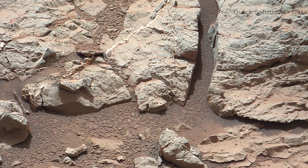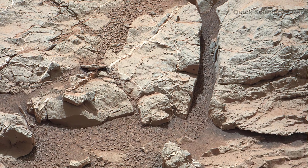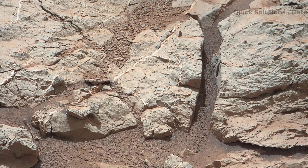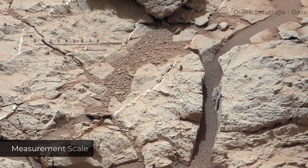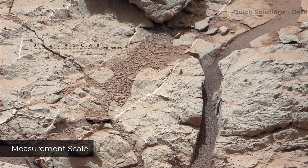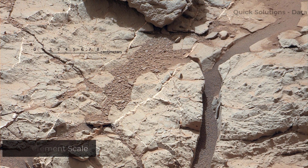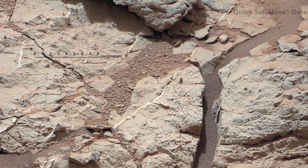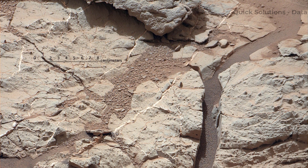These vein fills are characteristic of the stratigraphically lowest unit in the Yellowknife Bay area, known as the Sheep unit.